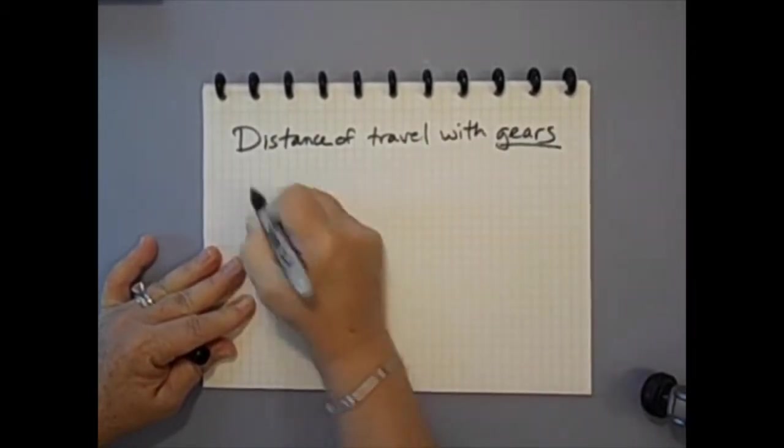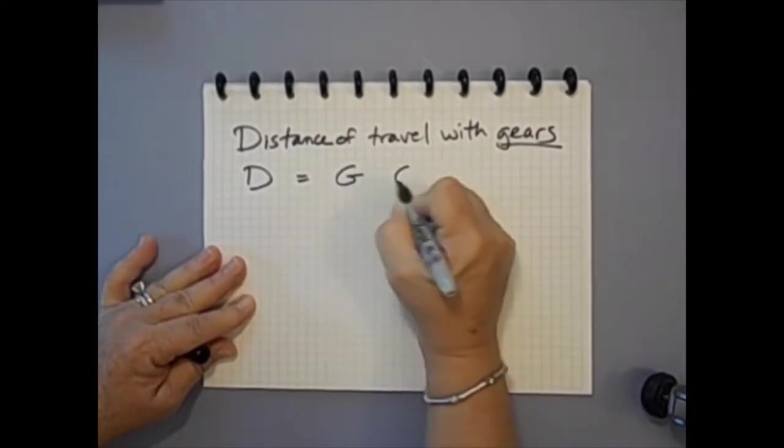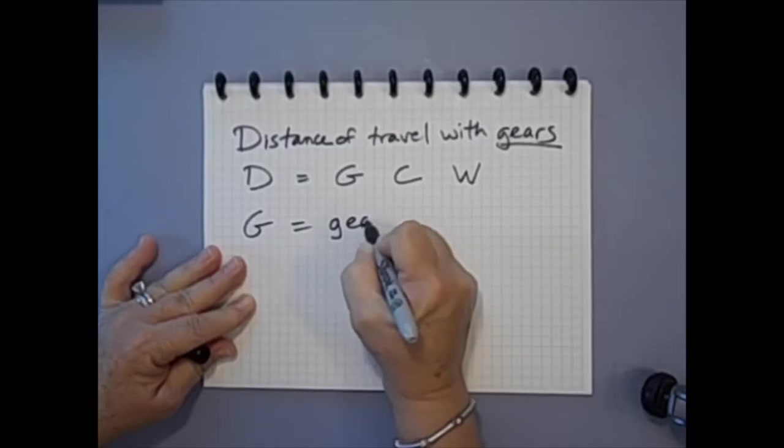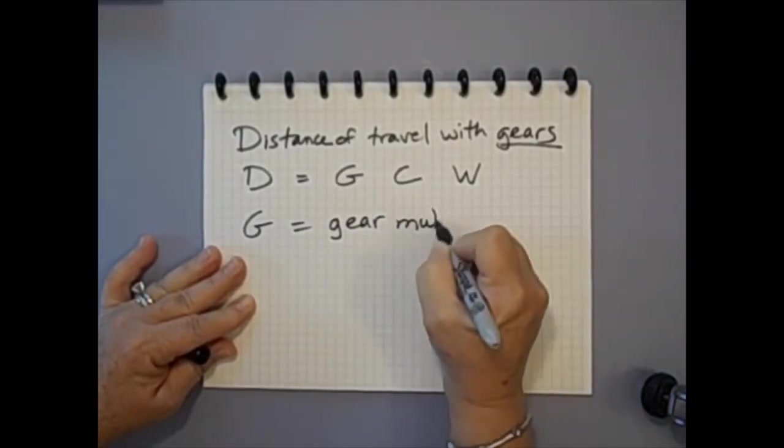With a gear ratio of 1 to 2 and a gear multiplier of 2, the CD wheel will turn 20 times, resulting in a distance of 754 centimeters.